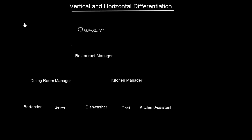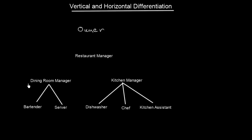Now let's draw it. We have a bartender and server, which are responsible under the dining room manager. Then dishwasher, chef, and kitchen assistant are responsible under the kitchen manager. And then our dining room manager and kitchen manager are responsible under the restaurant manager. And then there is an owner who owns several restaurants, and in each of them he has assigned a restaurant manager, so he's just communicating with this one person.